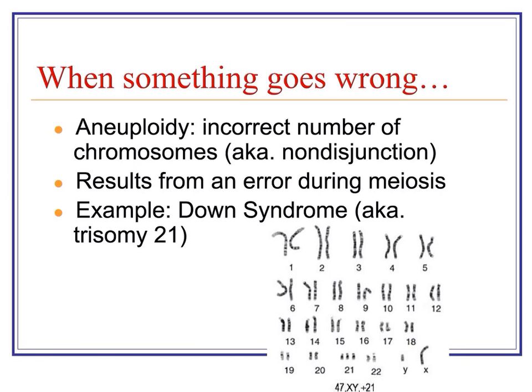An example you are probably all familiar with is Down syndrome, also known as trisomy 21. Rather than having two copies of chromosome 21 — one from the mother and one from the father — there are three, as we can see here. You can also see the notation 47XY+21, meaning this individual has 47 chromosomes, an X and a Y, so male, and an extra copy of chromosome 21. That is a notation a geneticist might use.